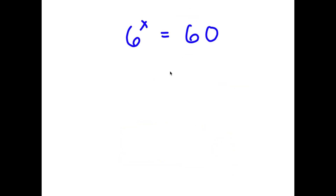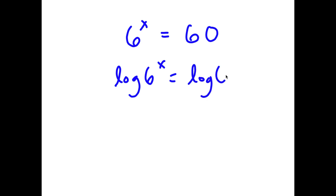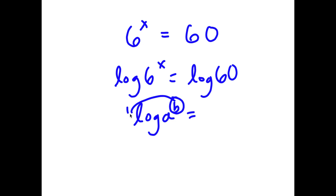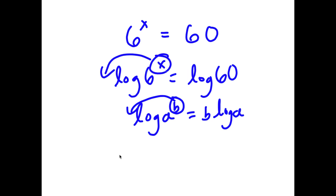Alright, so in this problem, I have 6 to the power of x is equal to 60. So I'm going to first start by taking the log on both sides. So I have log 6 to the power of x is equal to log 60. Now, if I have something in the form log a to the power of b, I can move this exponent b to the front, so this equals b times log a. So I can move x to the front, giving me x times log 6 is equal to log 60.